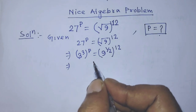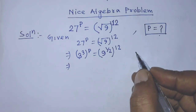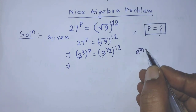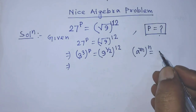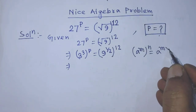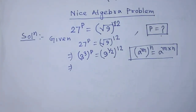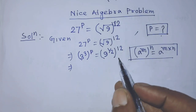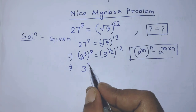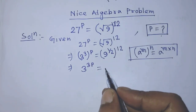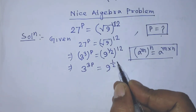To simplify both sides of this equation, we apply the formula: a to the power m, whole to the power n, is equal to a to the power m times n. According to this formula, we can write 3 to the power 3p is equal to 9 to the power 1 over 2 times 12.